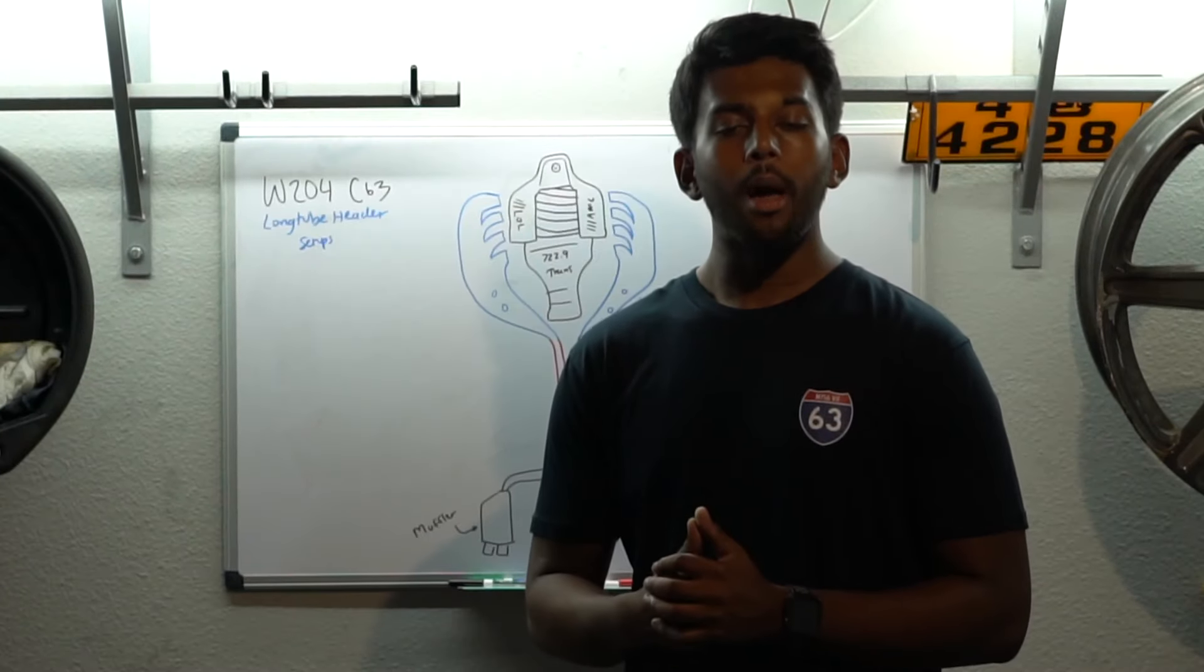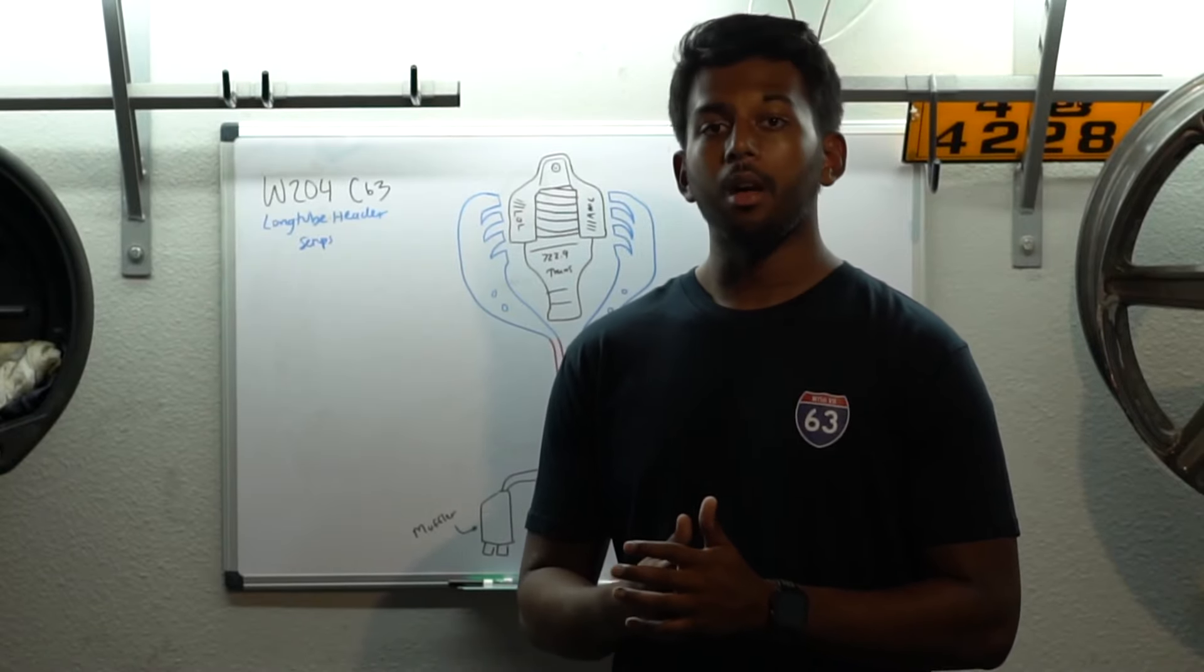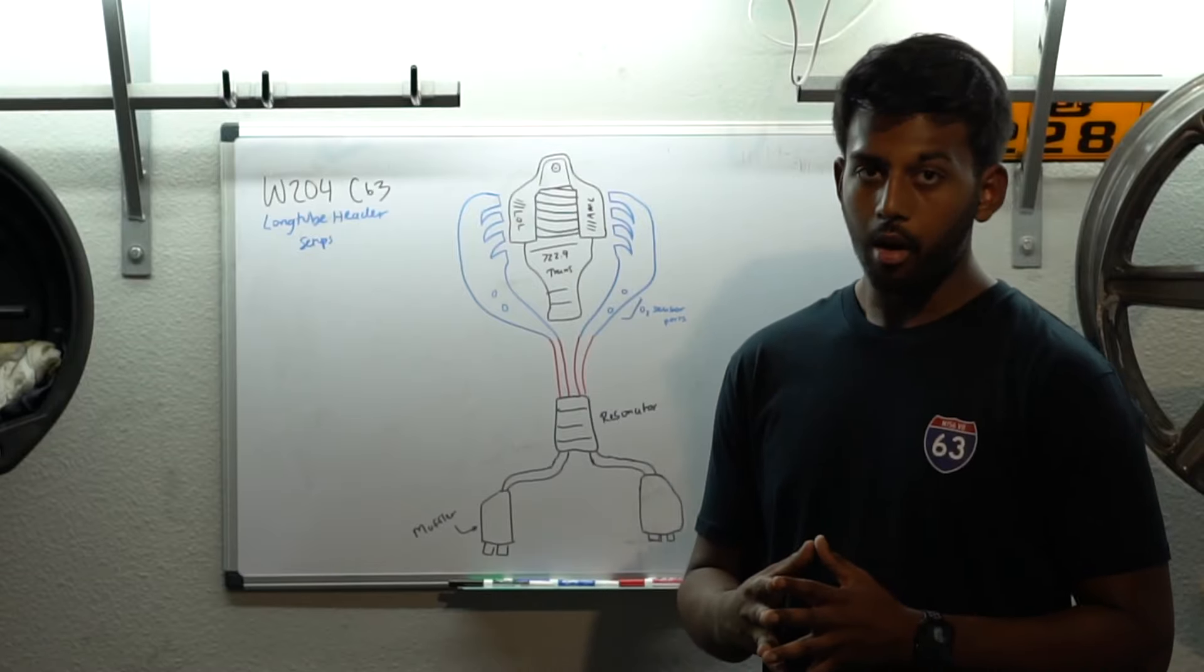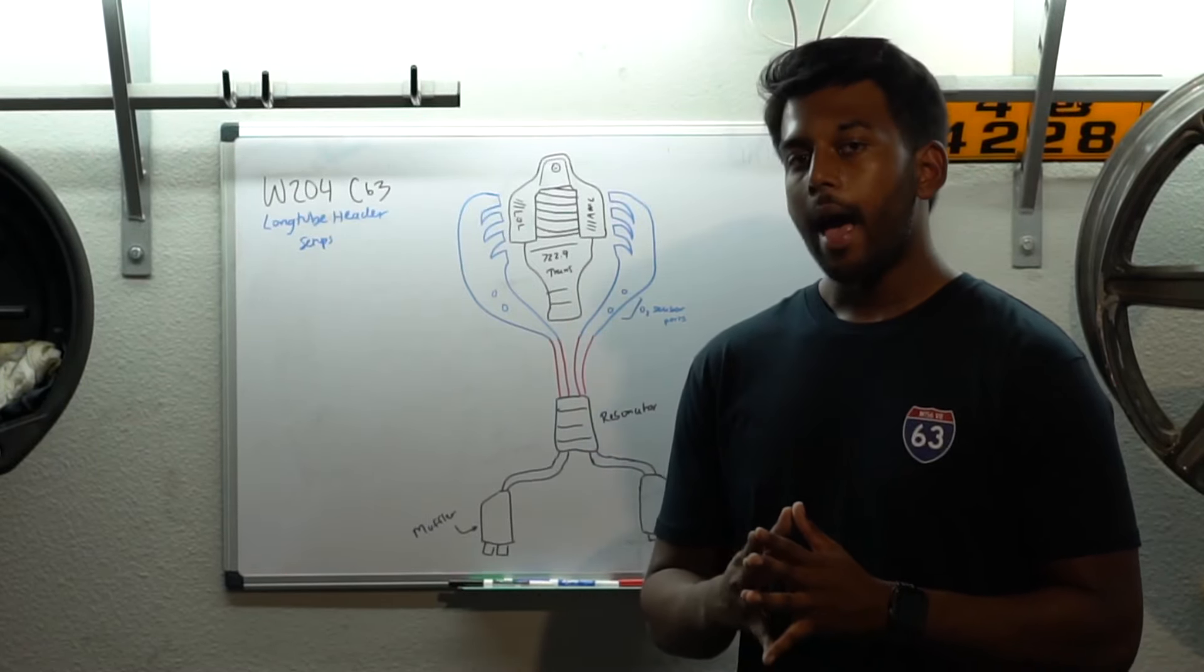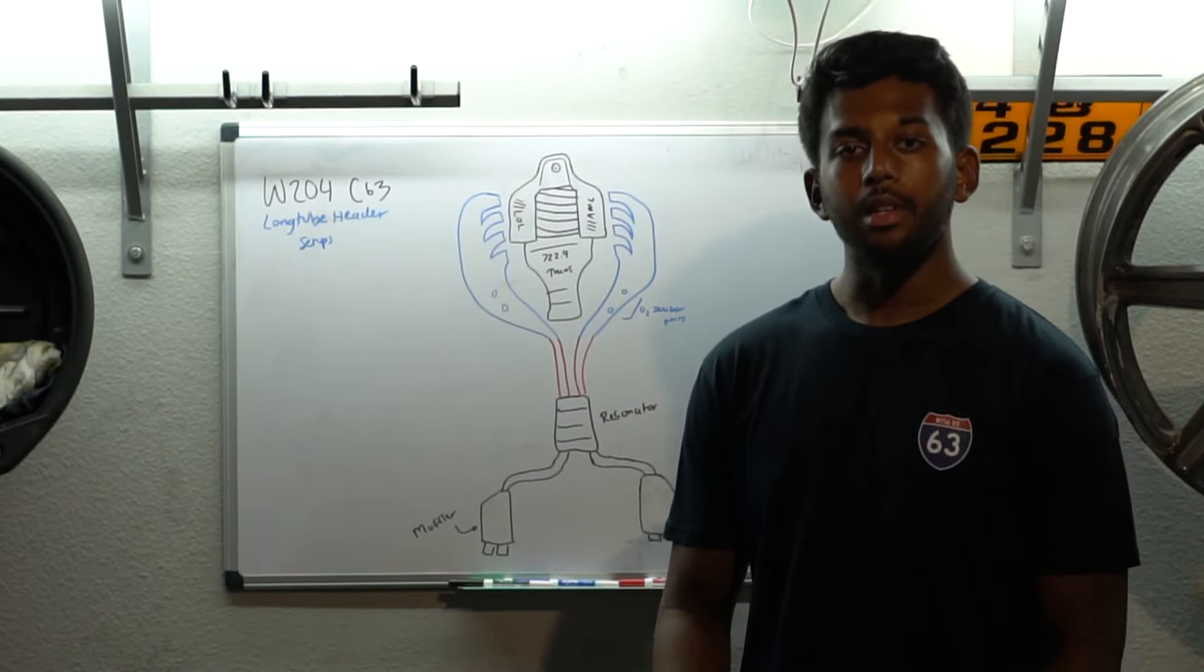Let's talk about headers. So, MBH headers, ARH headers, Agency Power, Moscow Supercharger, all great companies to buy headers from. Even the Weisstek, although they're very expensive. In fact, they're all pretty expensive in the C63. But, headers are the biggest power mod you can do for the naturally aspirated M156 engine.